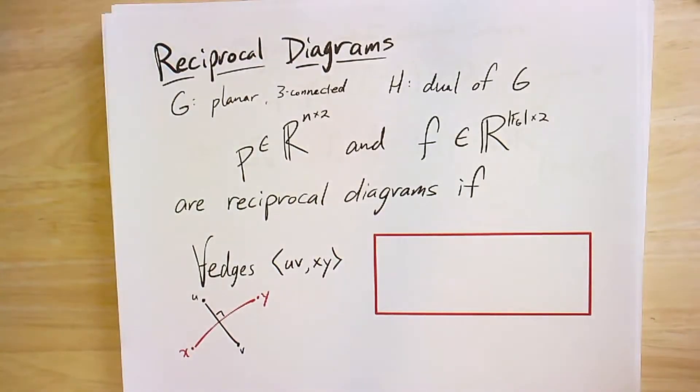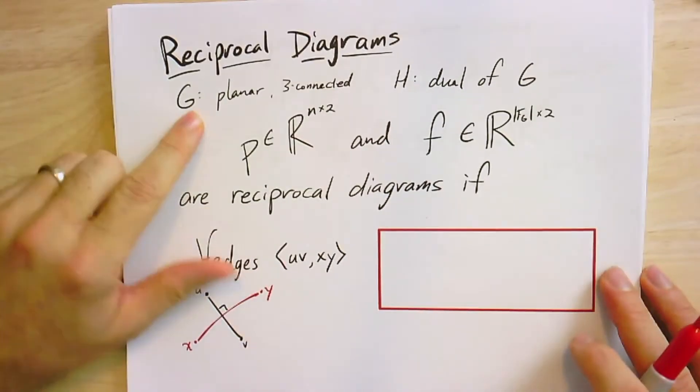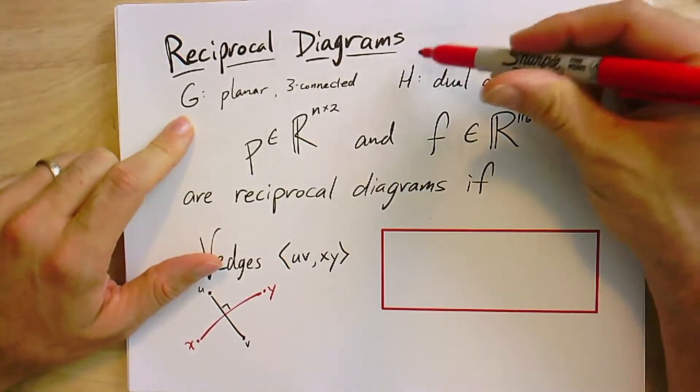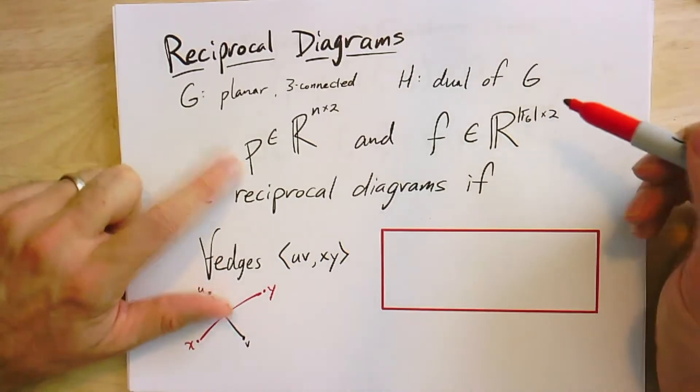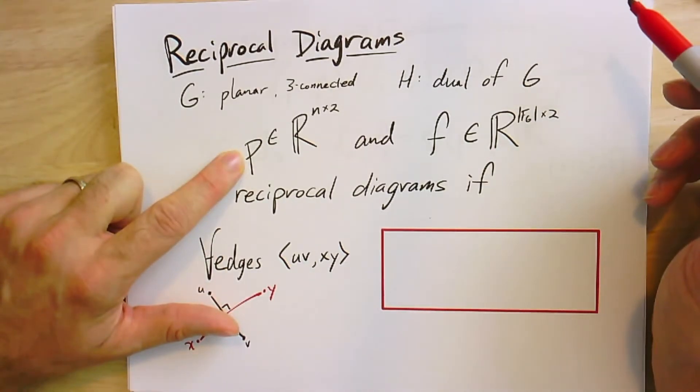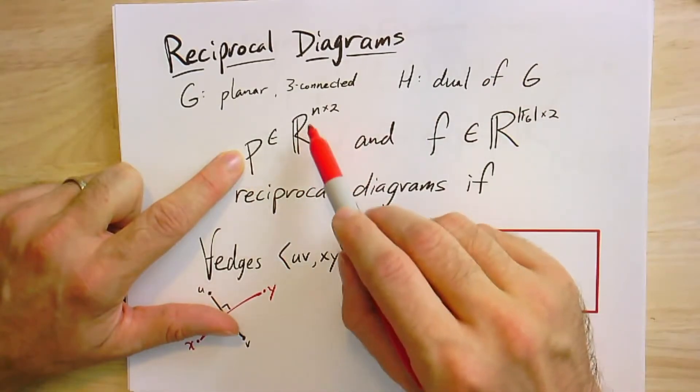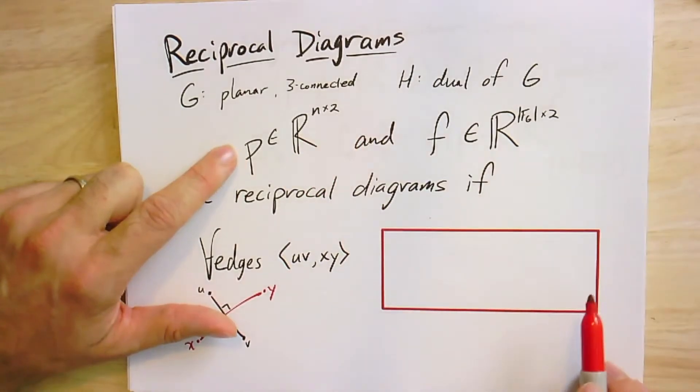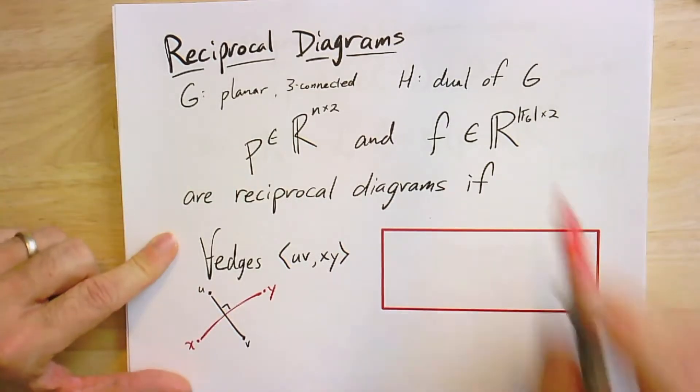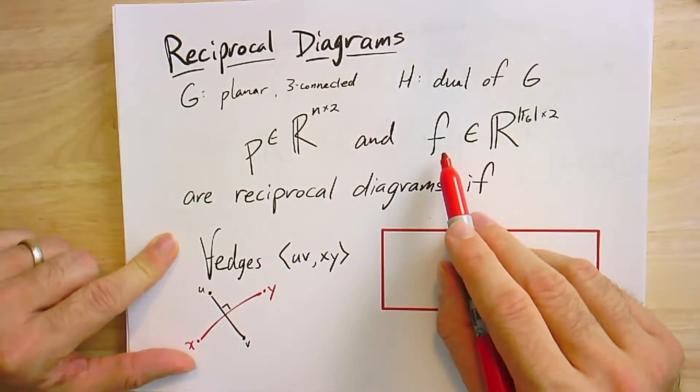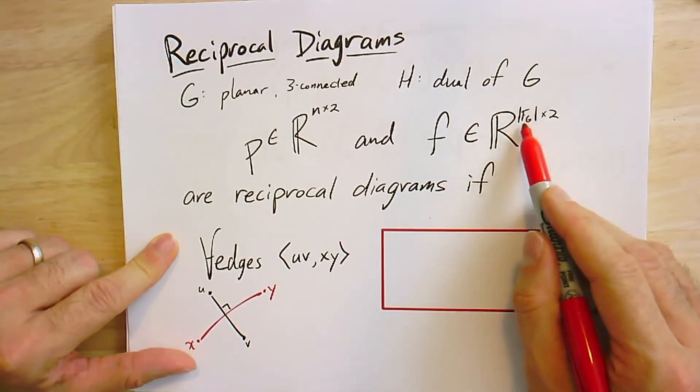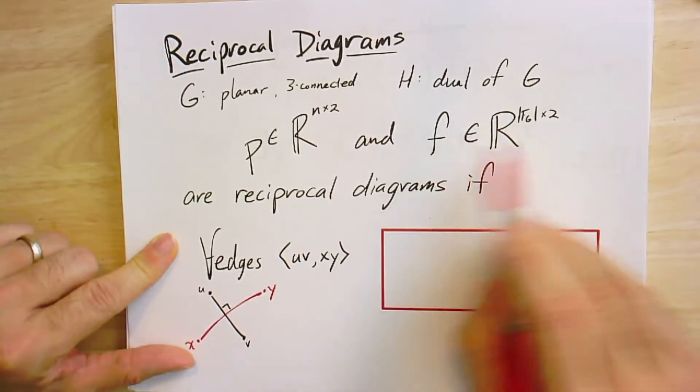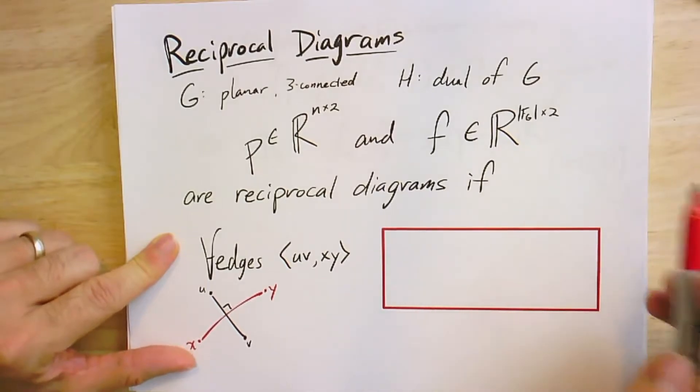So here is the reciprocal diagram. If G is planar and three connected, and H is the dual of G, we'll give the dual a new name just so we don't have to leave around too many stars. And so I have a linear drawing of P. So you think of this perhaps as a matrix, an n by 2 matrix. For each of the n points, I have two coordinates, its x and y coordinates. That's my linear drawing of G. And F is going to be a linear drawing of H. And so it has however many faces G had. That's how many rows there are in this matrix. And then it's got two columns for x and y.